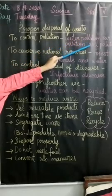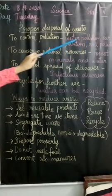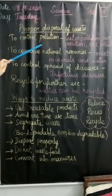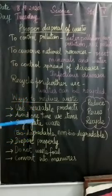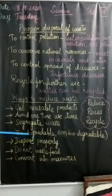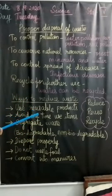For example, soil pollution — if the soil is polluted, what will happen to our environment? We cannot grow trees. Those places will get wasted.